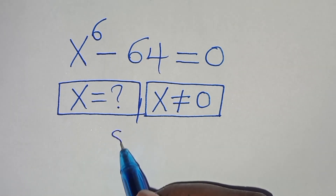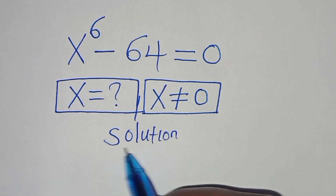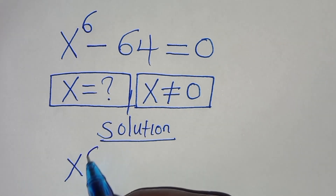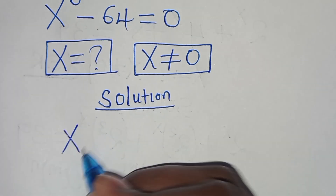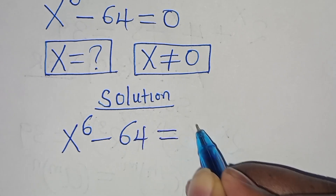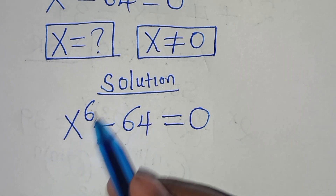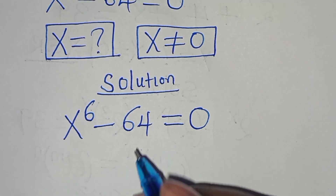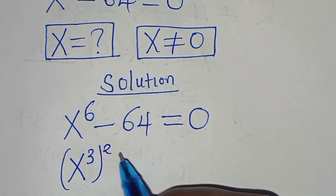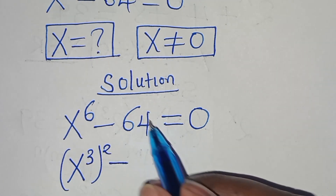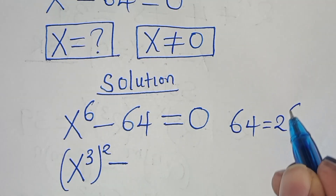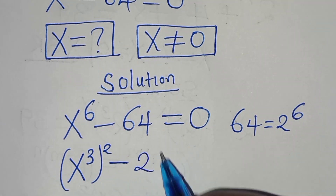Let's present the solution from here. We have x to the power of 6 minus 64 equals 0. We can express x to the power of 6 as x to the power of 3 raised to the power of 2. And we can express 64 as 2 to the power of 6.